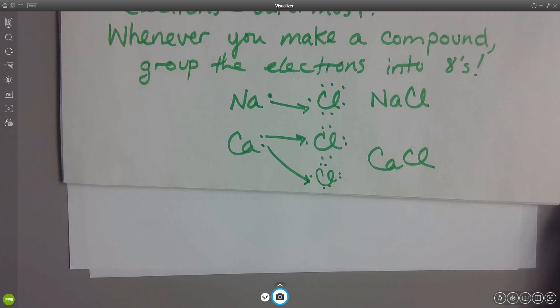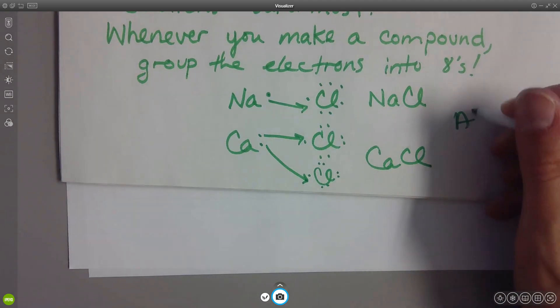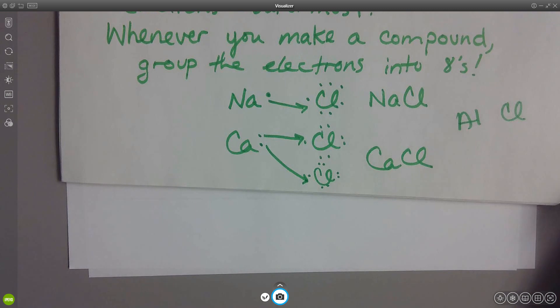Last one. I want you to try one more on your own. I want you to try aluminum chlorine on your own. Try it. So look at element aluminum. See what column it's in. See how many electrons it has.